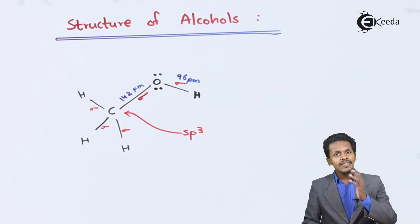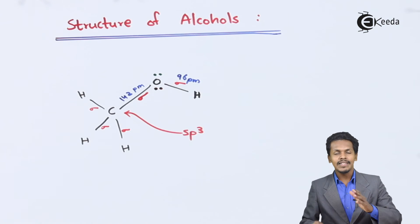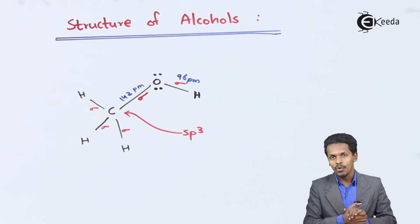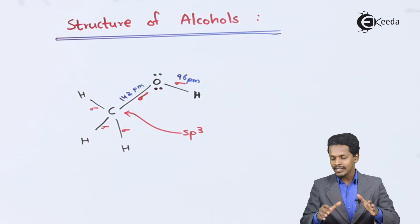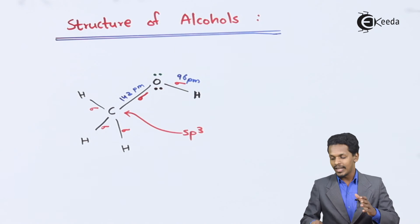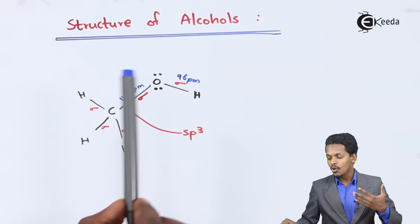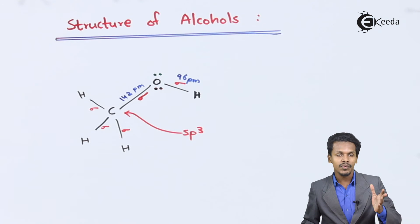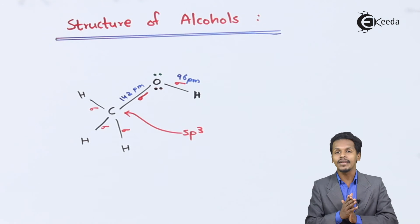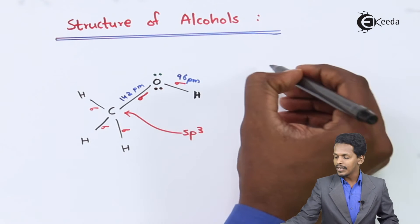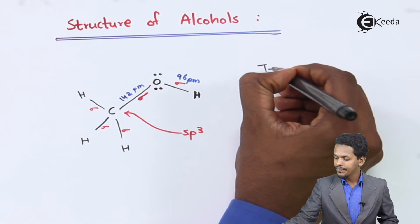The distance between this oxygen and this hydrogen is actually less, at 96 pm. As I said earlier, the structure is very much similar to that of the water molecule, and being an SP3-hybridized structure — with both the carbon and oxygen atom SP3-hybridized — the structure is nothing but tetrahedral.